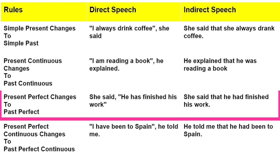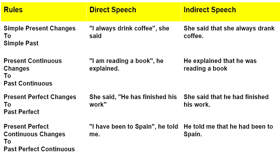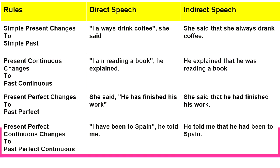Third rule: present perfect changes to past perfect. For example: she said, 'He has finished his work.' In indirect speech: she said that he had finished his work. Fourth rule: present perfect continuous changes to past perfect continuous. For example: 'I have been to Spain,' he told me. In indirect speech: he told me that he had been to Spain.